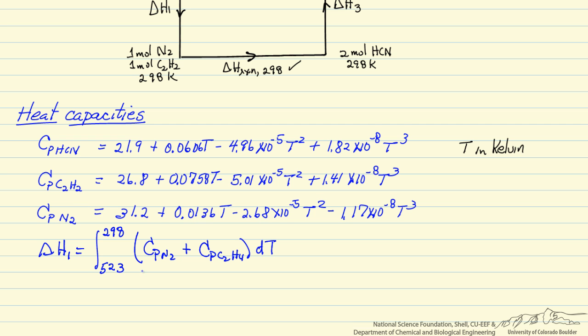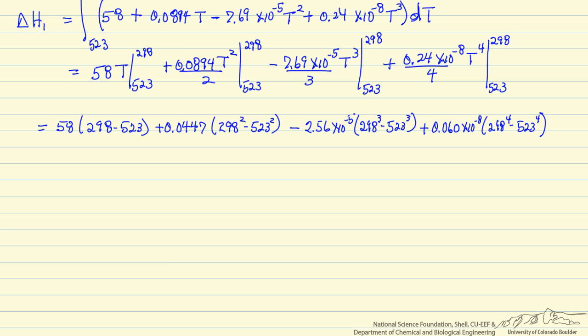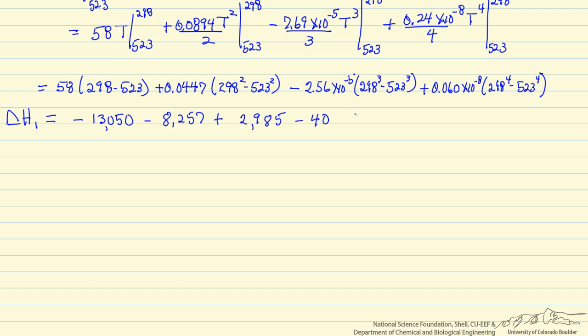So I am going to substitute in the values for the heat capacities and I am going to combine terms. I will combine this term plus this term for the first term in the integration and likewise for the other terms. And so we have 4 terms that we are going to integrate. And then we have substituted in the limits for each of the terms. And now we will do the math to calculate each of these terms, which gives us a value for delta H1 of minus 18,362 joules, which is minus 18.4 kilojoules.